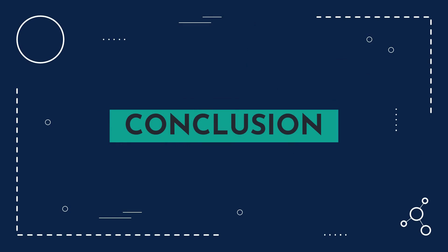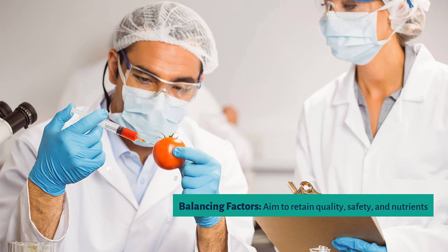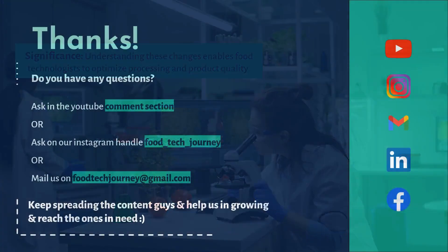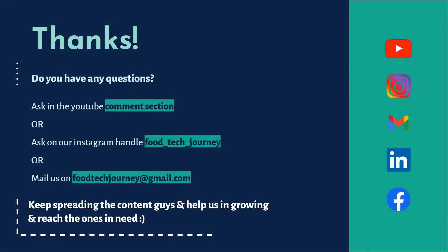In conclusion, our main aim is to retain quality, safety and nutrients. Food chemistry is all around us — from browning reactions to vitamin loss — and we have to understand these factors. Our significant role as food technologists is to understand these changes to optimize processing and product quality. If you have any doubts, you can ask in the YouTube comment section or on our Instagram handle, or email us at foodtechjourney@gmail.com.